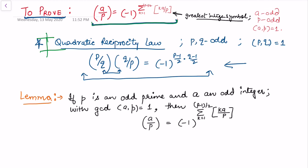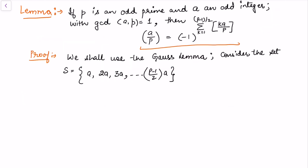The lemma states: if p is an odd prime and a is an odd integer with gcd(a, p) = 1, then the Legendre symbol (a/p) equals minus 1 to the power of the summation of floor(ka/p) for k from 1 to (p-1)/2. To prove this, we shall use Gauss's lemma.